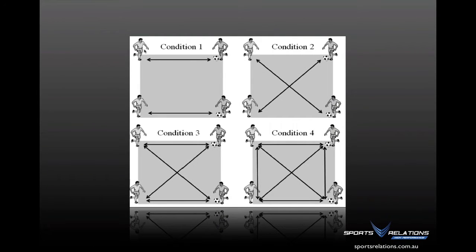The study looked at whether, when you train these components in isolation — just the action or motor skill — compared to when you combine them together, what's the actual impact on the effectiveness of the skill, how it's executed, and the range of variability in the motor skill produced.